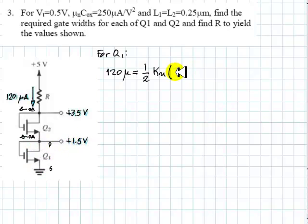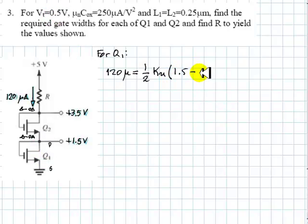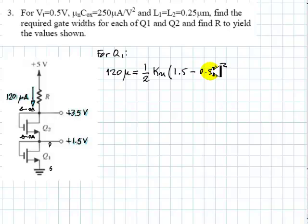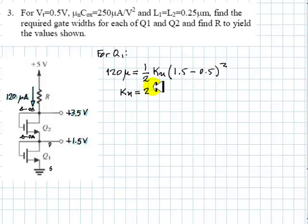Remember, it's 1.5 minus VT, the threshold voltage, which is 0.5 volts, and all of that squared. Well, this is 1 squared, which means that KN has to be 240 microamps per volt squared.